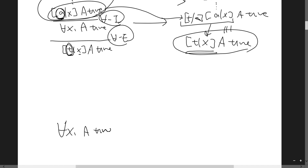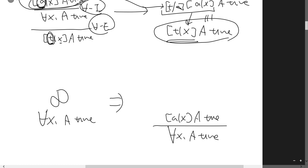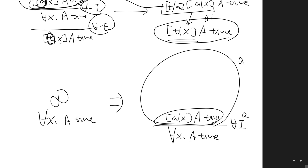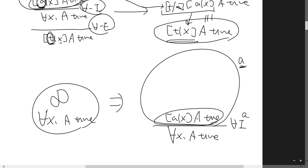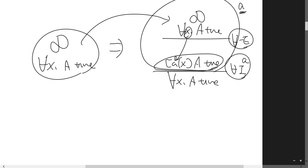For local completeness of universal quantification: given a proof of 'for all x, A', we expand it by applying the universal introduction rule to introduce parameter a, then applying the universal elimination rule substituting a for x. This shows we can reconstruct the judgment, establishing local completeness.